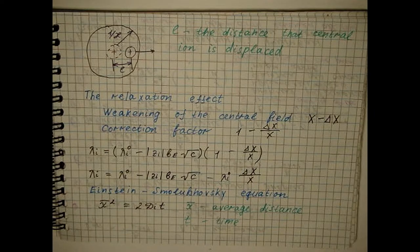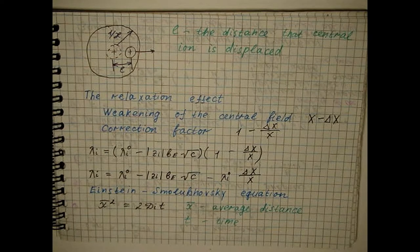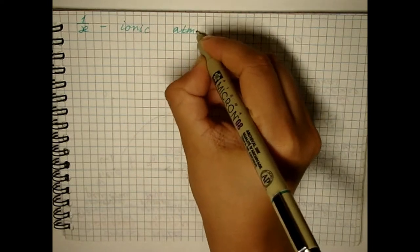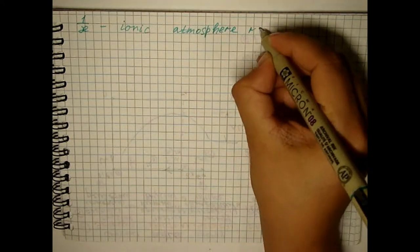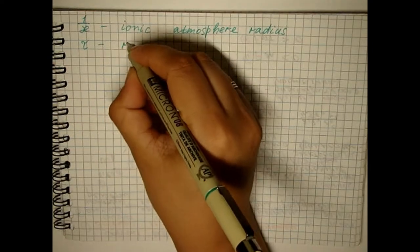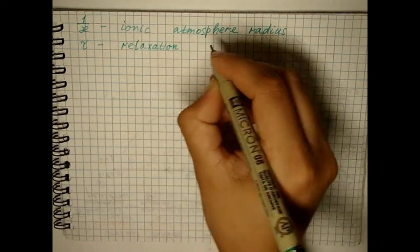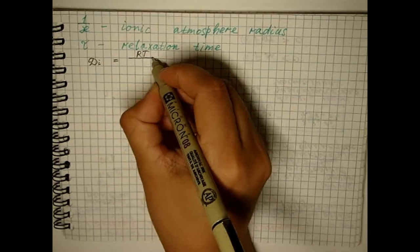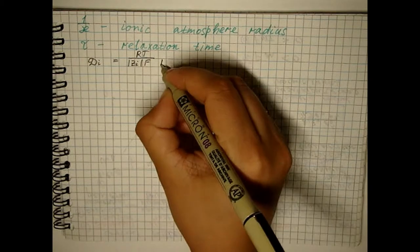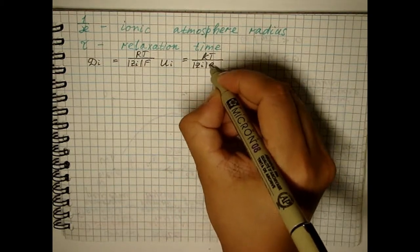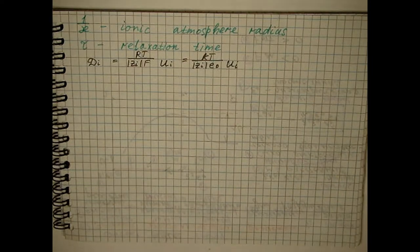Replacing the average distance by the radius of the ionic atmosphere, replacing the average of the ionic atmosphere and the time by the relaxation time, and considering that we eventually get the result.